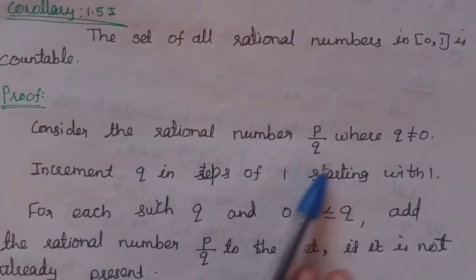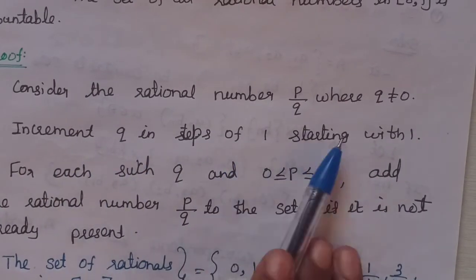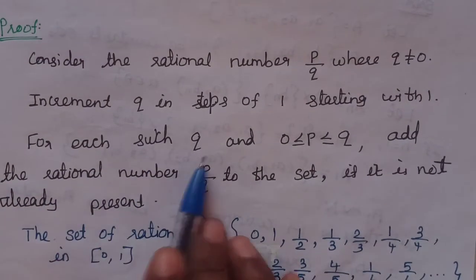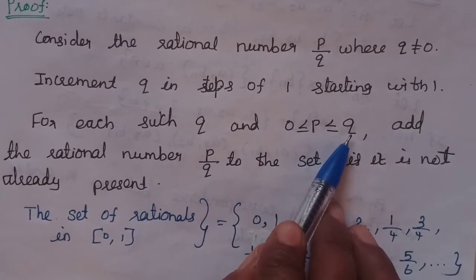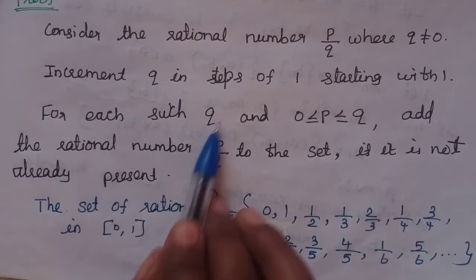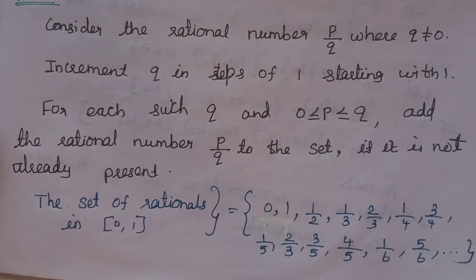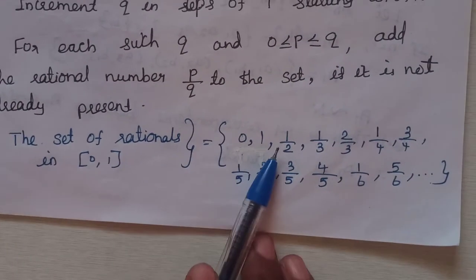Consider the rational number P by Q where Q is not equal to 0. Increment Q in steps of 1 starting with 1. For each such Q, P lies between 0 and Q, so 0 is less than or equal to P less than or equal to Q. Add the rational number P by Q to the set if it is not already present. The set of rationals in the closed interval 0,1 is: 0, 1, 1 by 2, 1 by 3, 2 by 3.